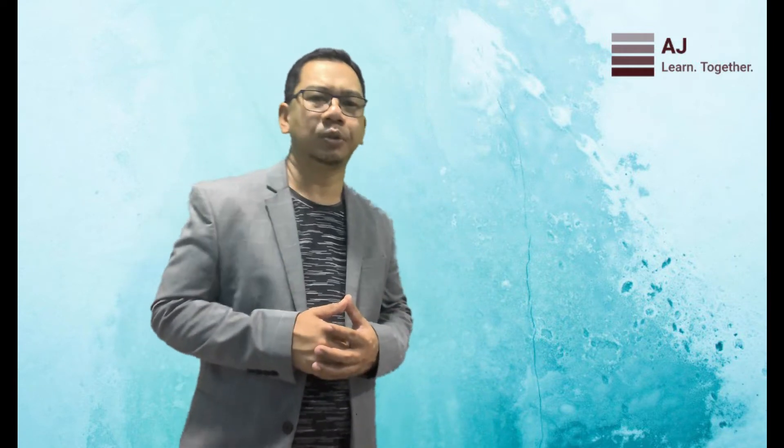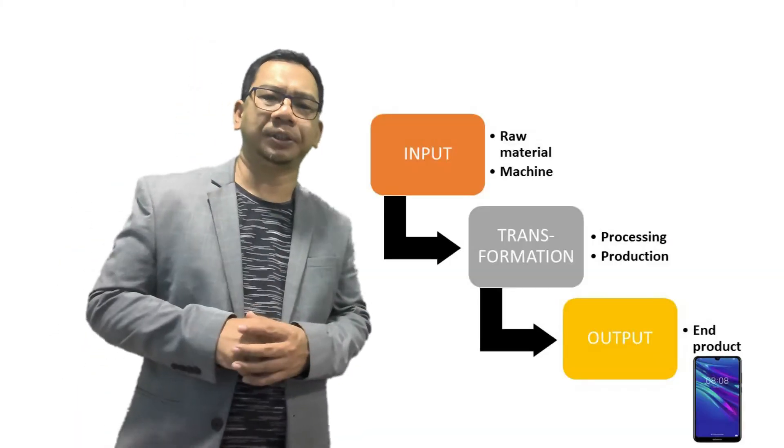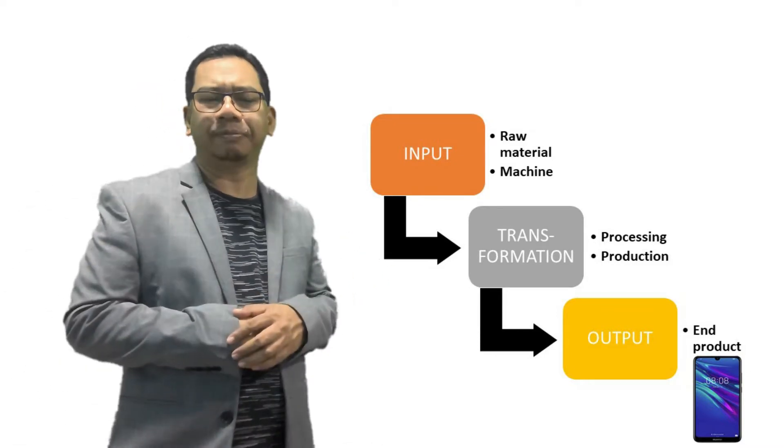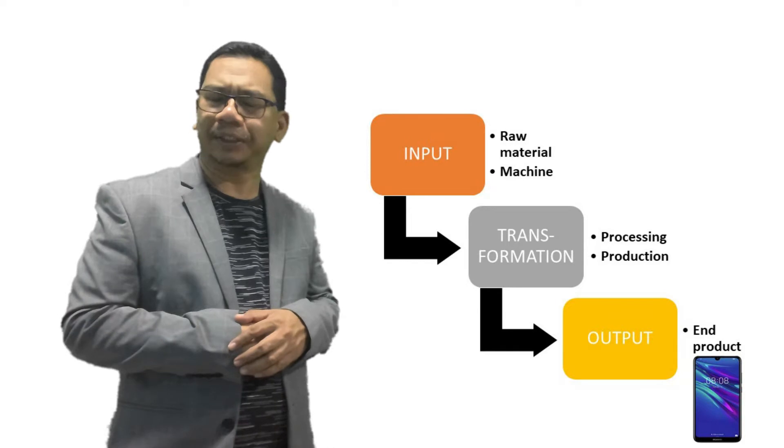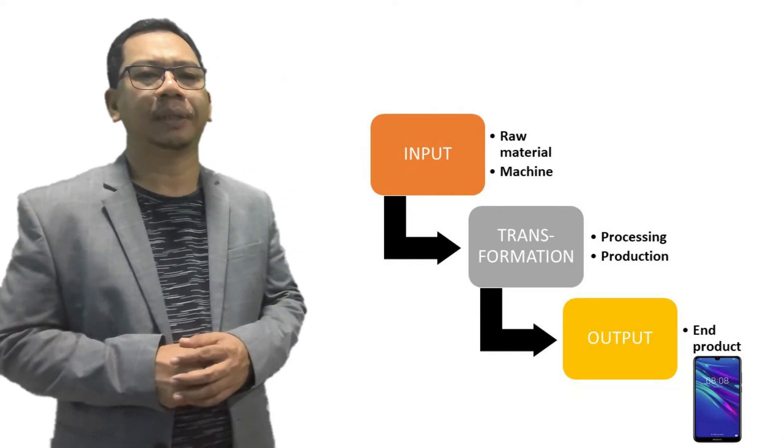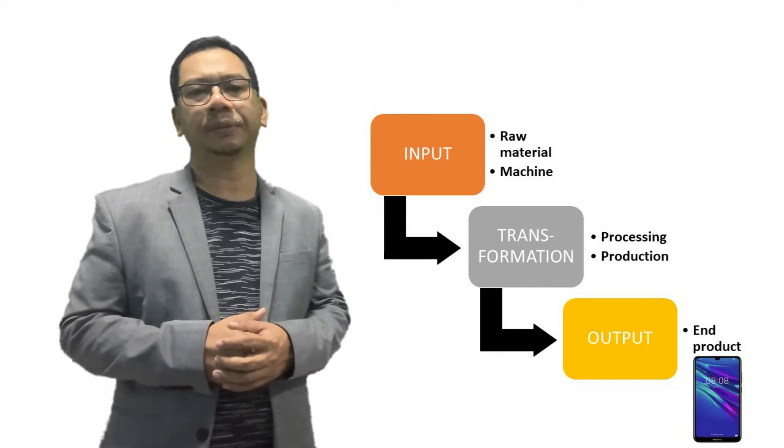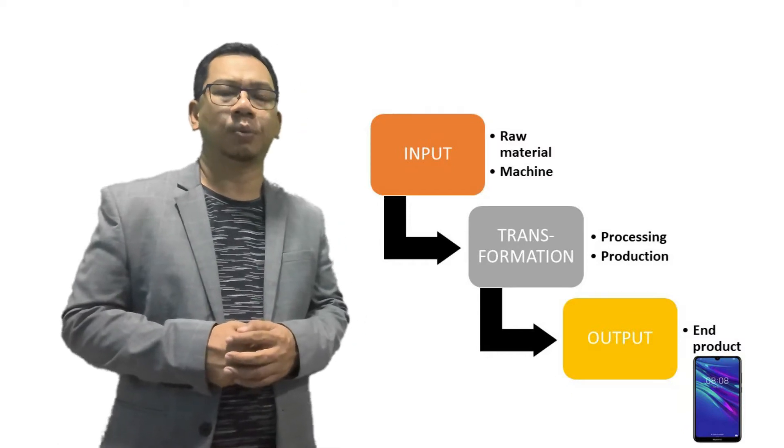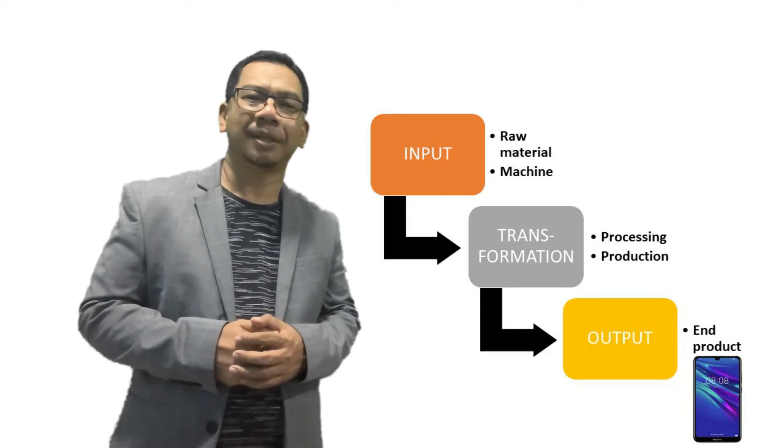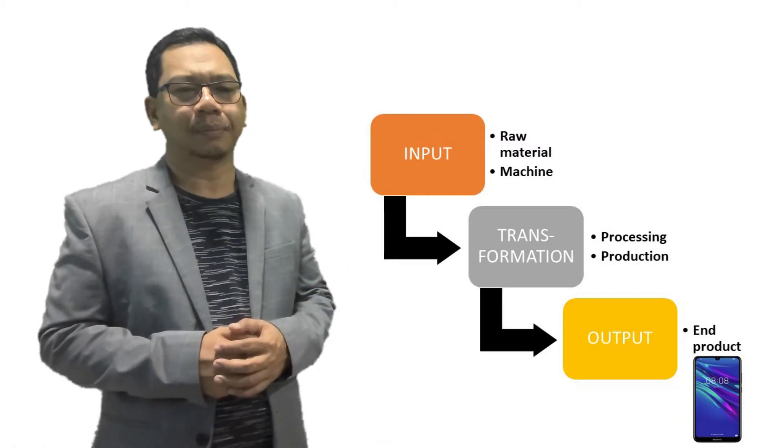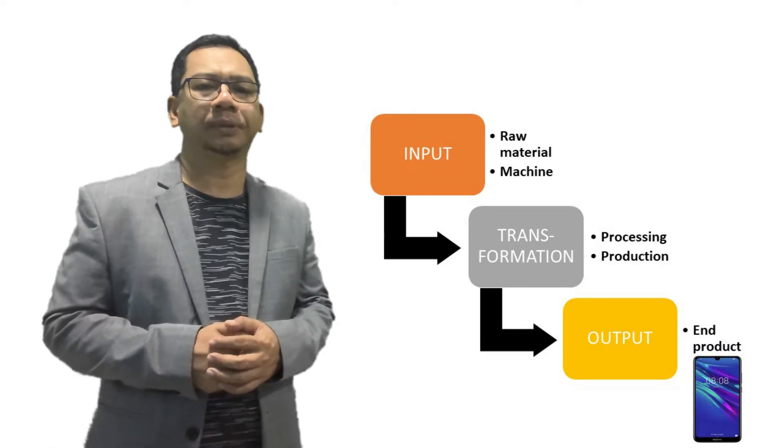What are the basic requirements to produce a smartphone? First requirement is raw materials. We should have, for example, like silicon, plastics, irons, and some electronic spots and components. Other than raw materials, what else? The second thing that we require are machines, robots maybe, and workers as well.